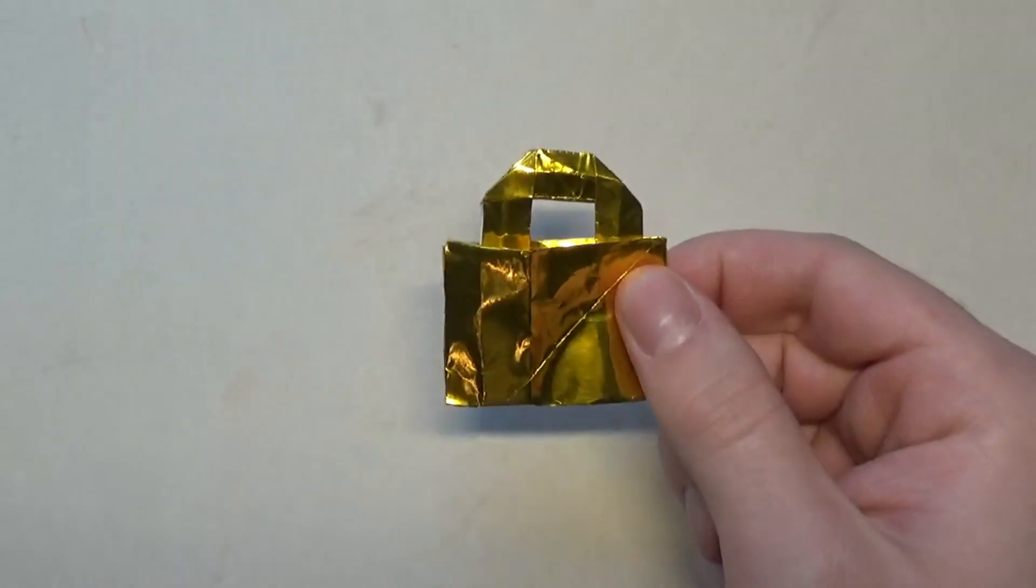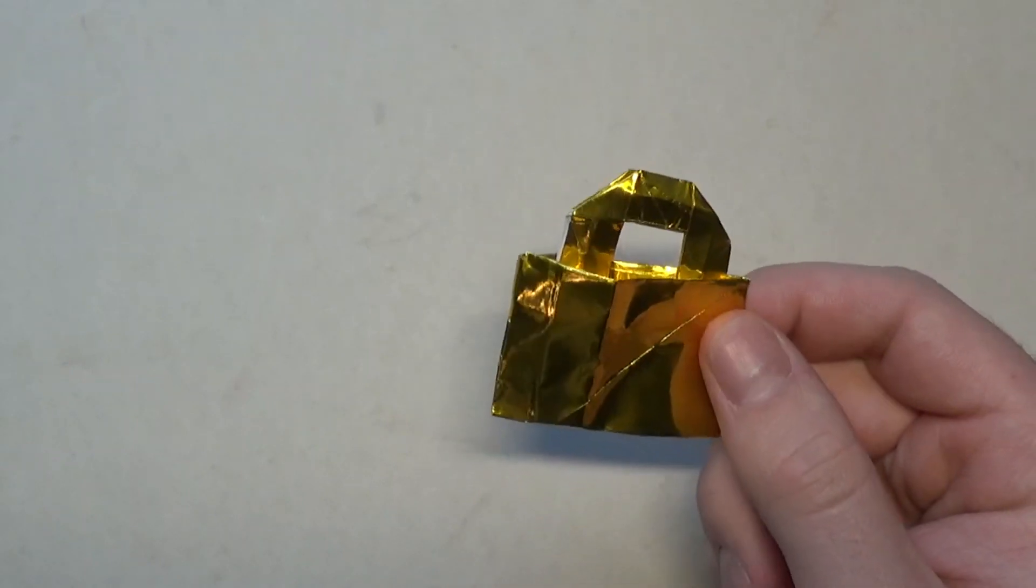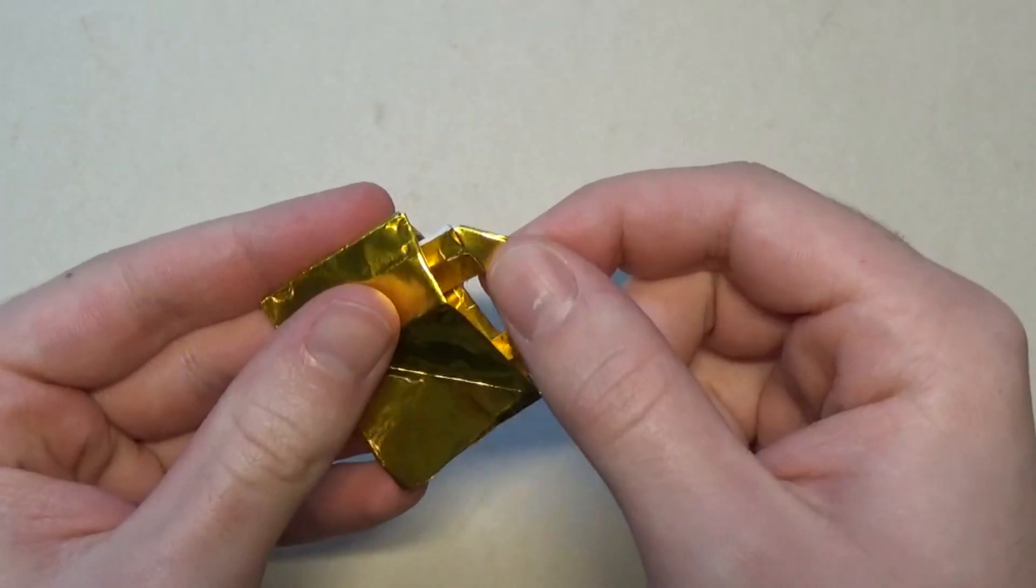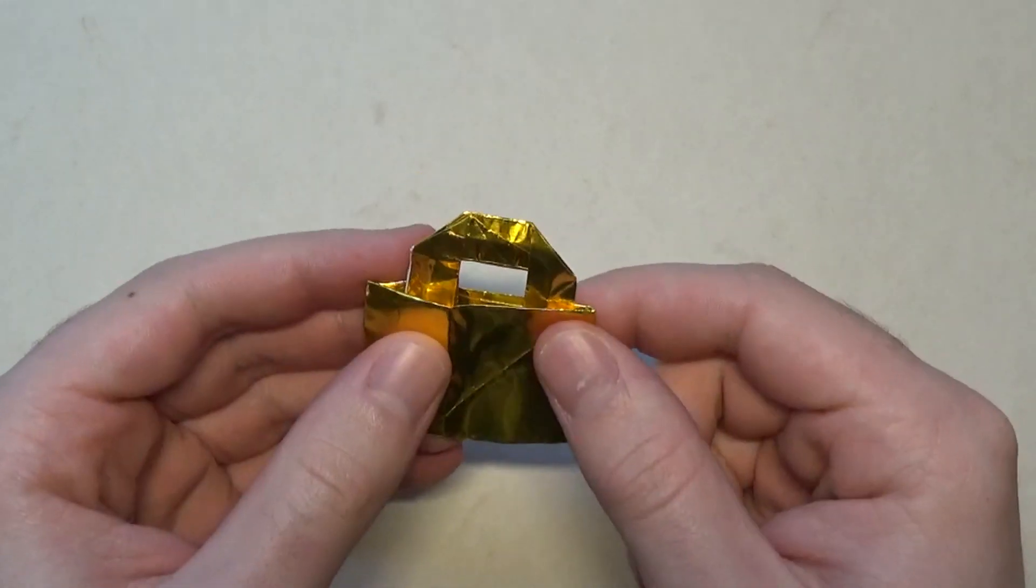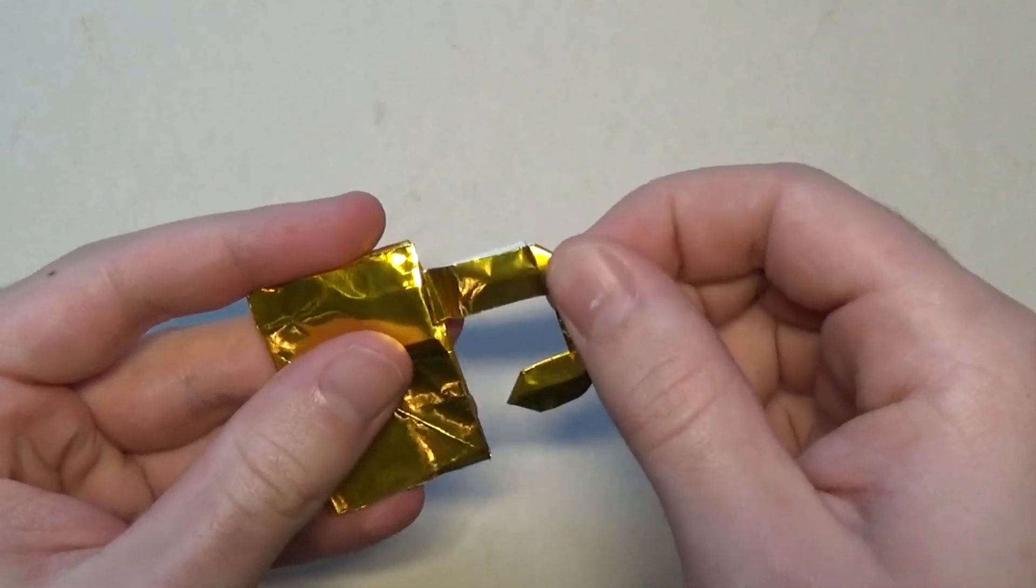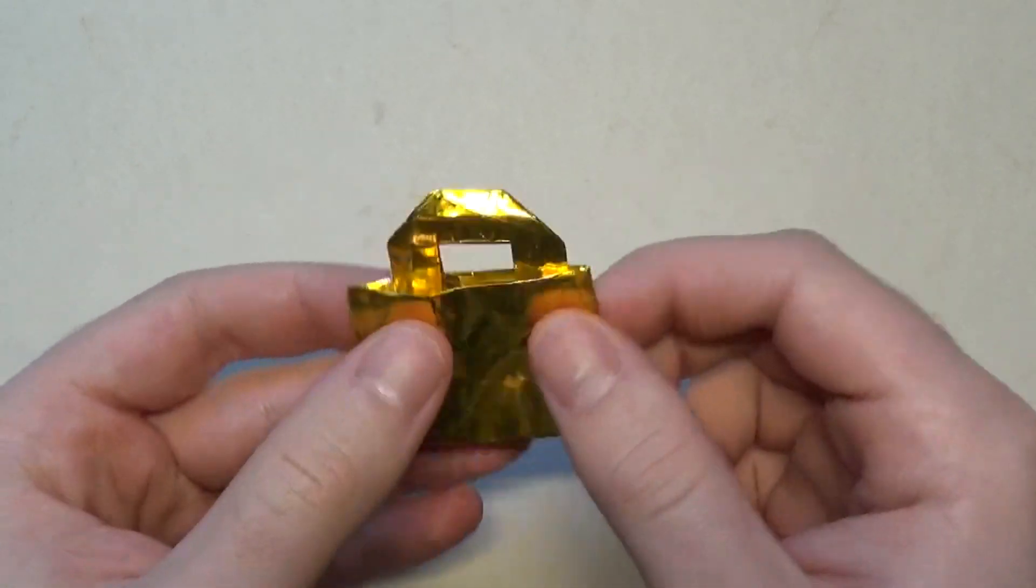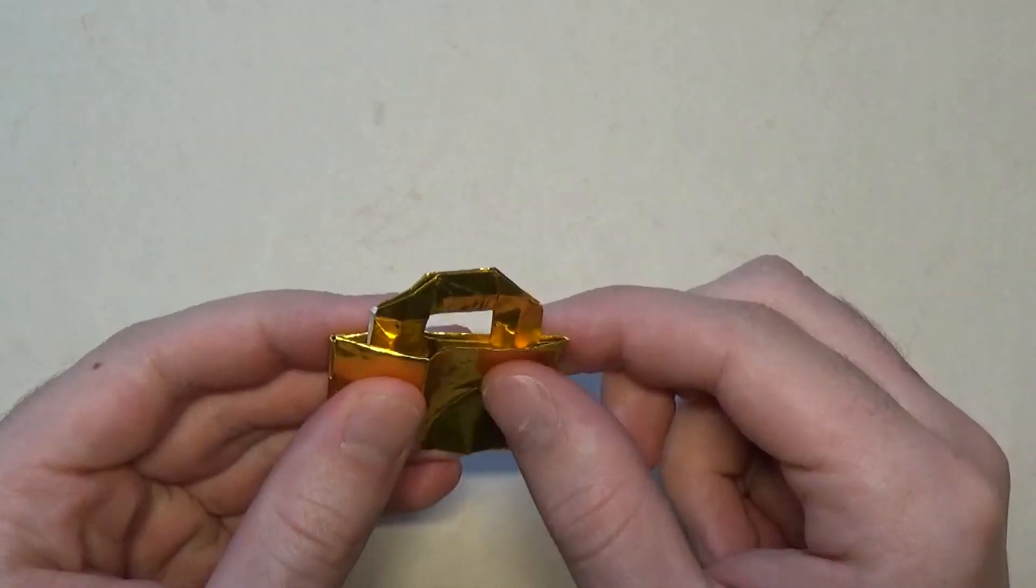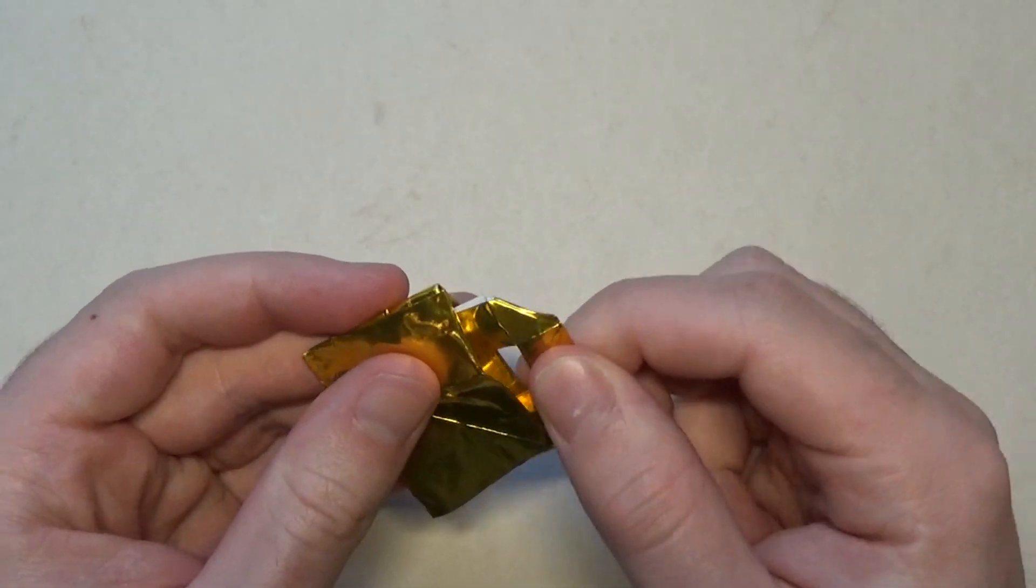I folded this model from a six inch square of foil origami paper that came with one of my packages of Kami. If you get a package of Kami or whatever, sometimes it comes with foil, and that's what I used for this model. It works from Kami too, but I used foil because I think it looks really nice that way.